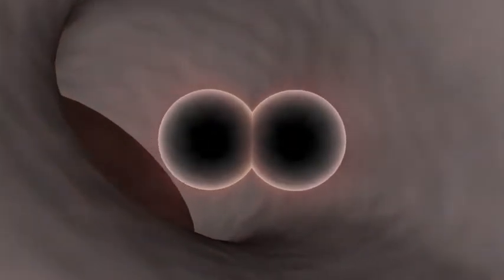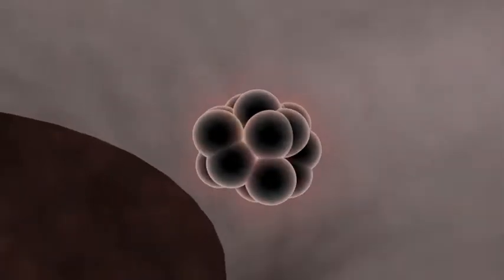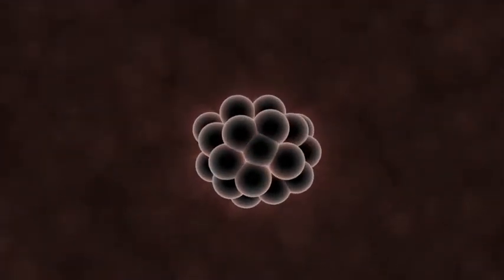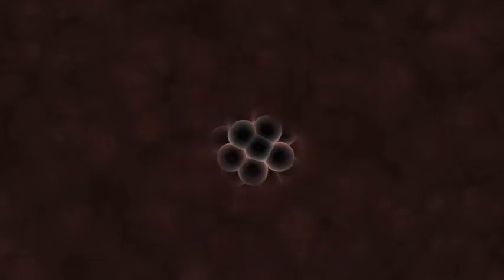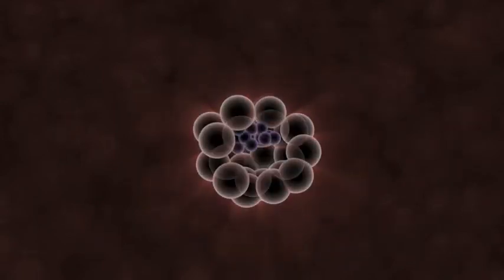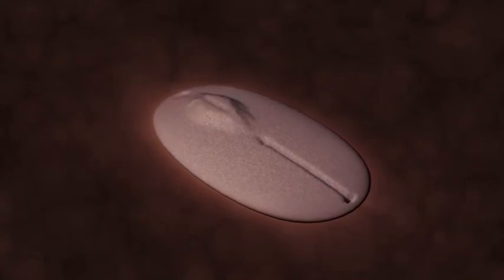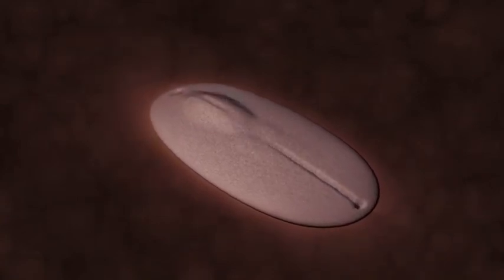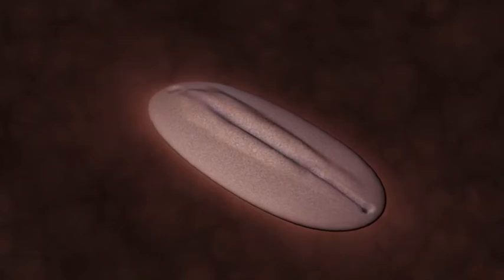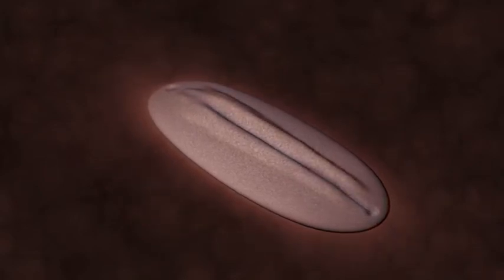Watching a fetus develop reveals much about the ancestral history of that organism. A human embryo in its third week is a featureless disk of cells until a furrow appears and plows its way across the top layer of cells. This is the primitive streak. As the primitive streak then begins to shorten, it leaves a trail in the form of a tube of tissues. This is the notochord.